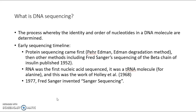The first sequencing was not of DNA — it was of protein. The first protein sequencing method was invented by Edman, called Edman degradation. Following that, other scientists, including Fred Sanger, developed new ways to determine the order and identity of amino acids in chains or peptides. Fred Sanger published the first complete sequence, which was the beta chain of insulin in 1952 — the first bioinformatically important sequence of a biological macromolecule.